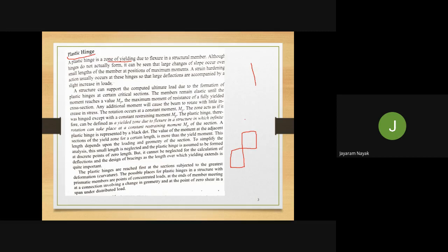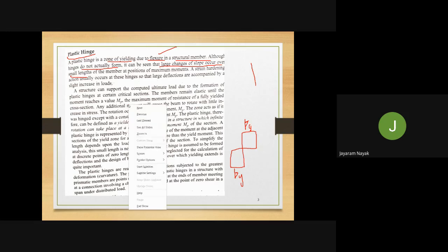A plastic hinge is a zone of yielding, where all sections from the end fiber to the neutral axis have yielded due to flexure. In structures, hinges do not actually form visibly — they can be seen through a large change in slope occurring over a small length, as shown in the previous session.